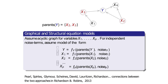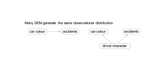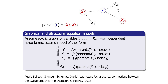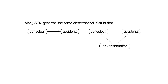At first you might think: why write it down like that? You might get a multivariate normal distribution anyway, so why not just write down the distribution? The difficulty is that many structural equation models generate exactly the same observational distribution.